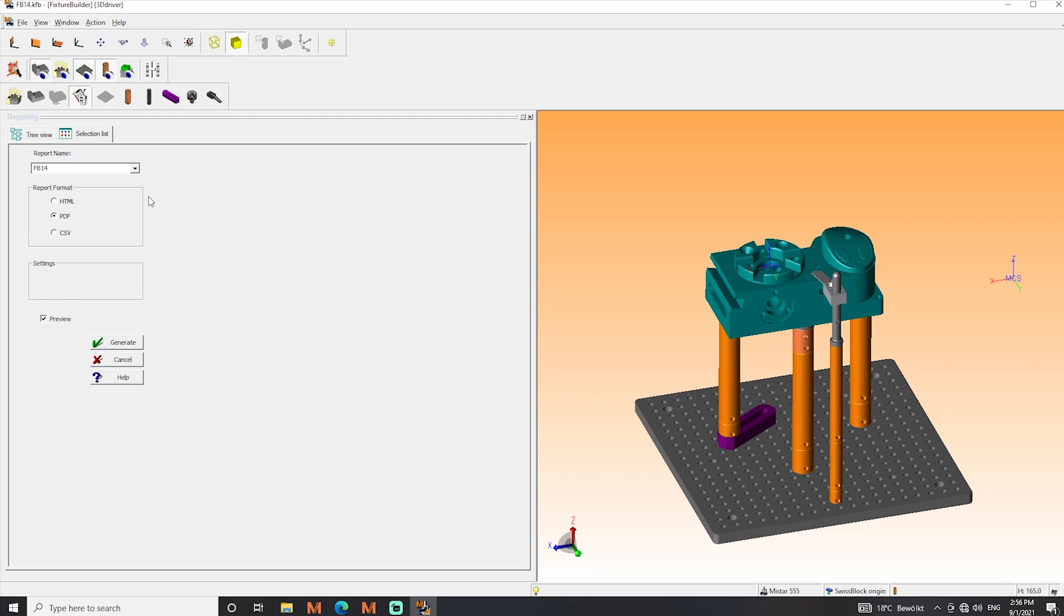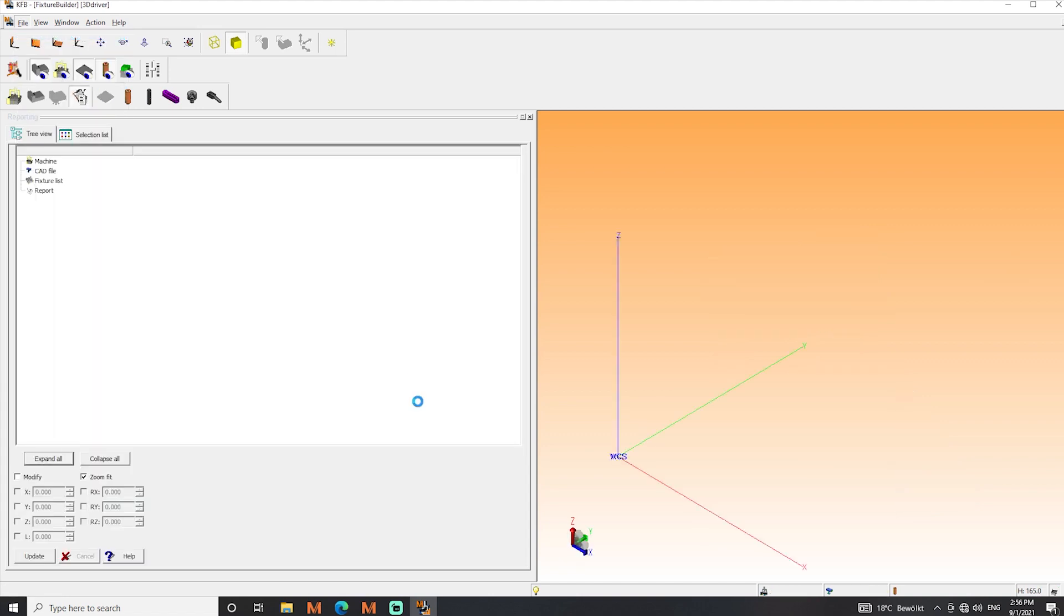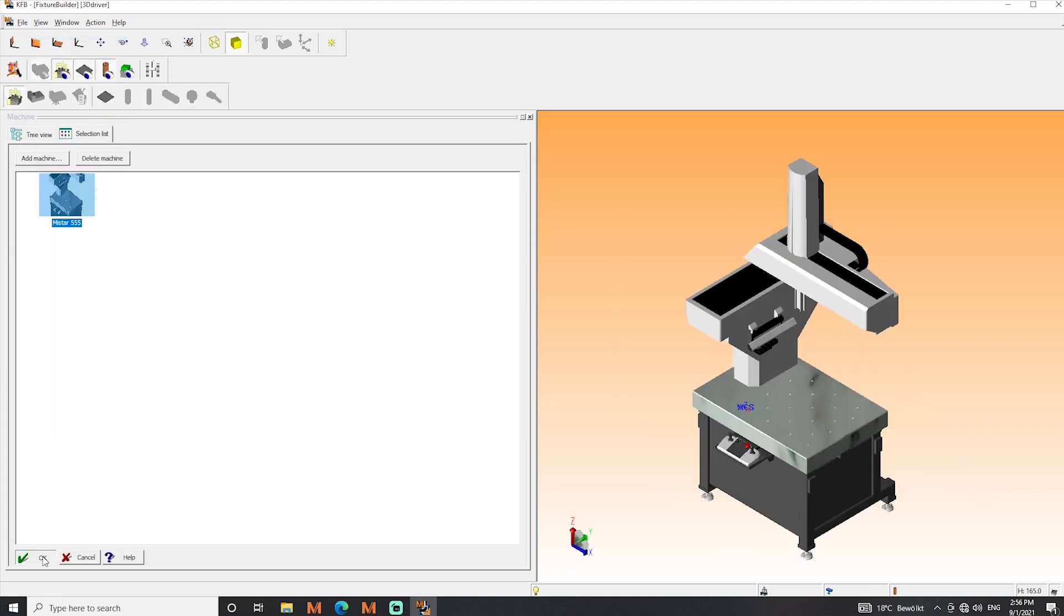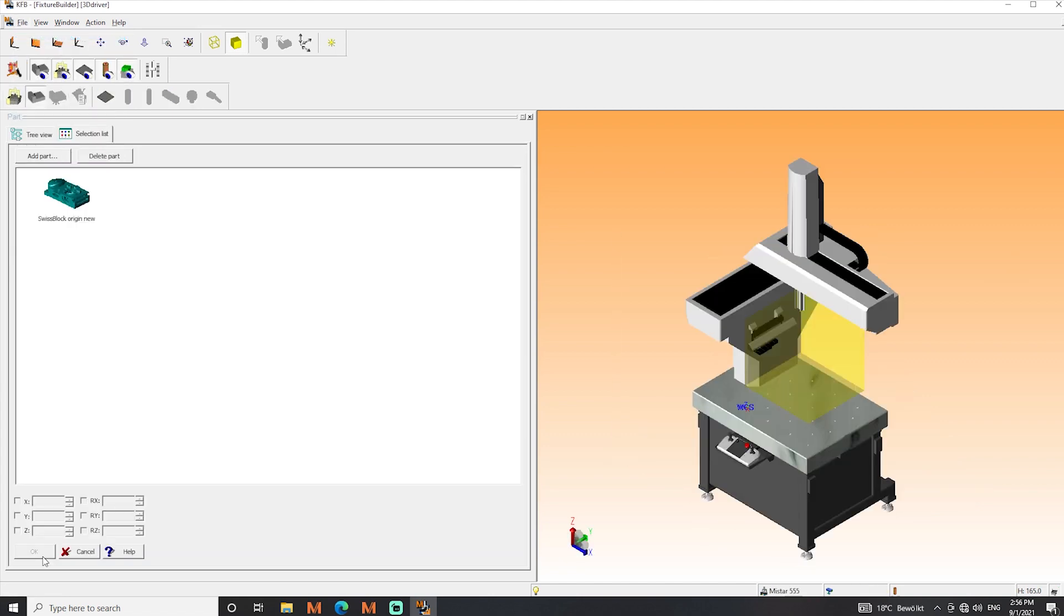We are going to open a new project in our Fixture Builder software. First of all, we need to load the CMM model that we are going to work with. In this case it is a MyStar, but you can create and modify any kind of CMM volume in the software.